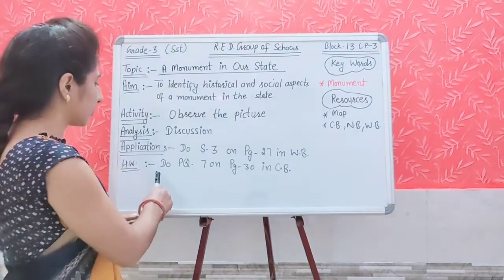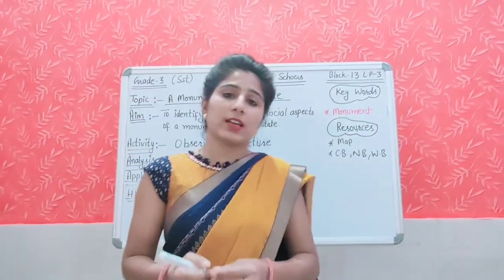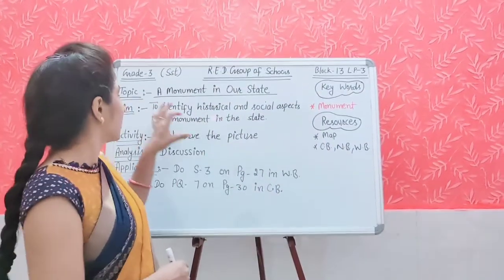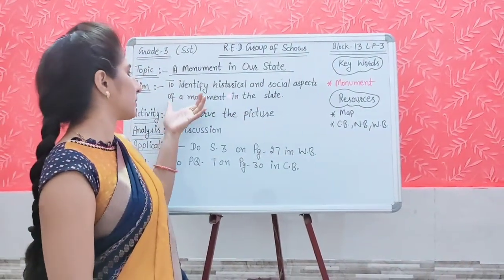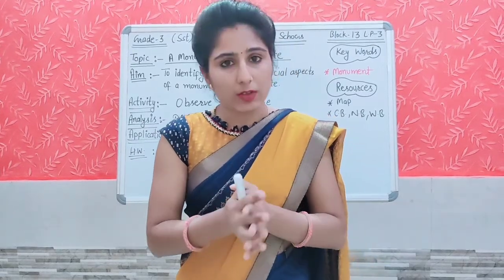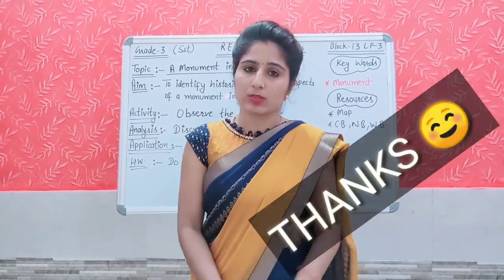Now it is time for homework. You will do practice question number 7 on page number 30 in your content book. At last, let us summarize our today's topic: 'A Monument in Our State.' Our aim was to identify the historical and social aspects of a monument in the state. We should conserve and protect monuments because they tell us about the history, art, culture, and the life of people of that time — they give us information about the past. Now be ready for the next class. Resources for the next class are the political map of India, content book, notebook, and workbook. Thank you, have a nice day.